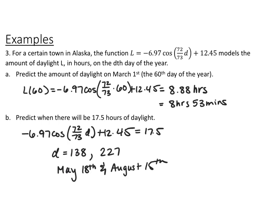So for the first one, they gave us the amount of daylight, which is d. So I plugged that 60 in for d and I just plugged that in my calculator and you end up with 8.88 hours or 8 hours and 53 minutes. And then for part b, they gave us the amount of daylight, so that's L. So I plugged in 17.5 in for L and I just used my graphing calculator and I found it was the 138th day, which is May 18th, and the 227th day, which is August 15th.